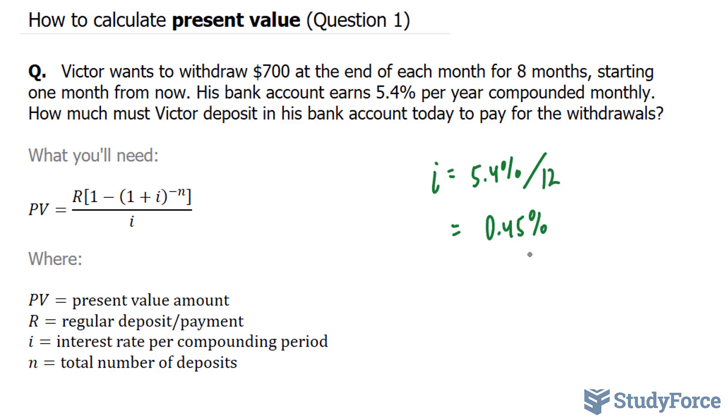Now of course, we can't use percentages when calculating these types of questions. Instead, we have to use the decimal version of this number, and the way we get the decimal version is by dividing the percent by 100. Doing that, we end up with 0.0045. So we just defined our i value.